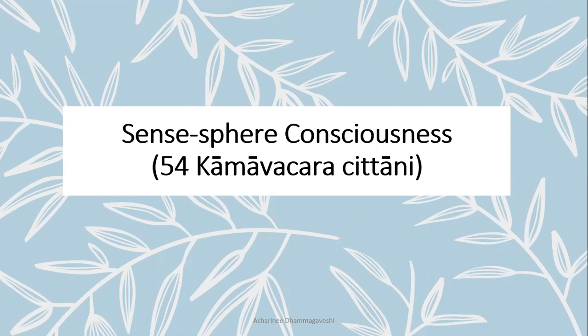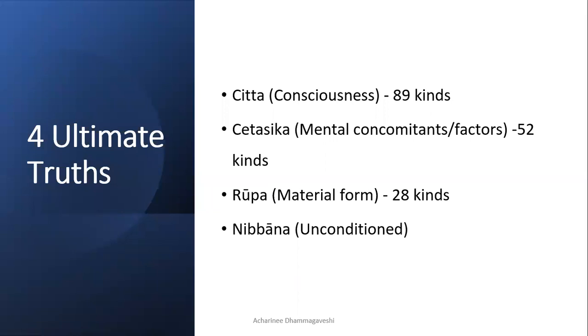In this talk we will discuss in greater detail the first ultimate truth, which is consciousness, focusing on the sense sphere consciousness or the 54 kama vachara chitani. The four ultimate truths are chitta, chetasika, rupa, and nibbana. Chitta refers to consciousness, of which there are 89 kinds; chetasika are mental factors with 52 kinds; rupa refers to material form with 28 kinds; and nibbana is the unconditioned.